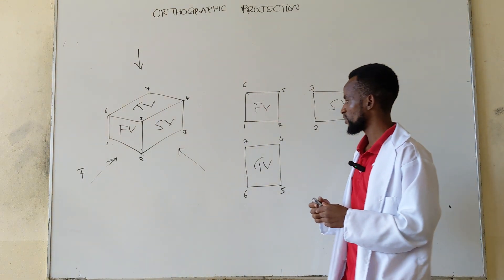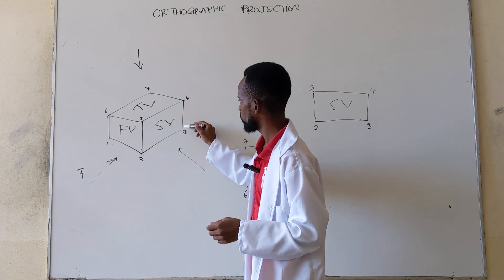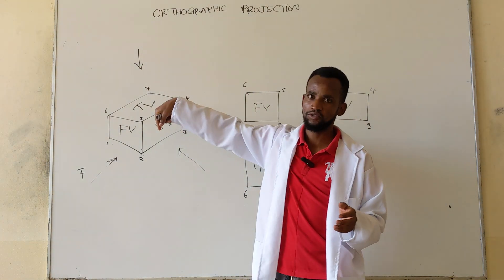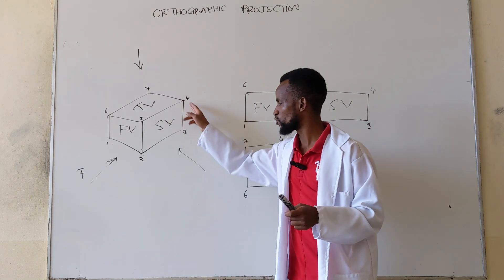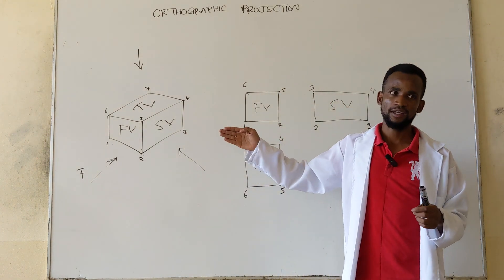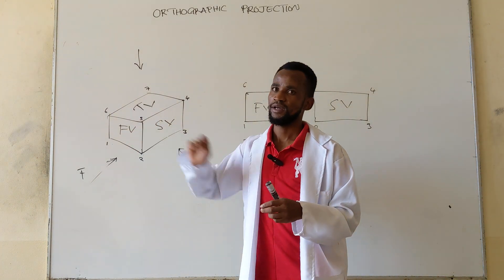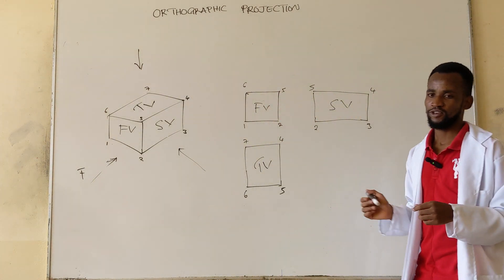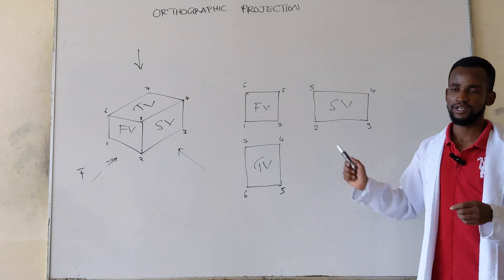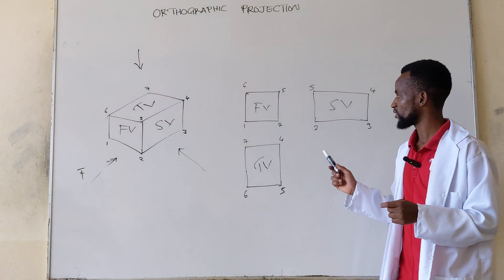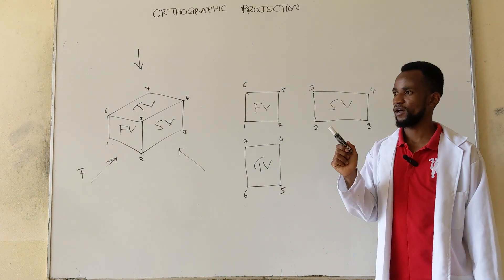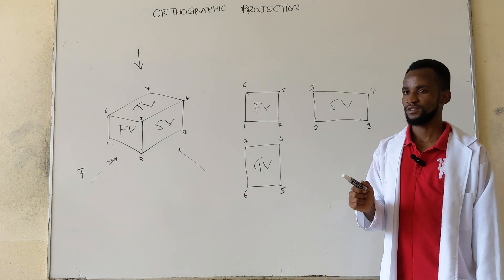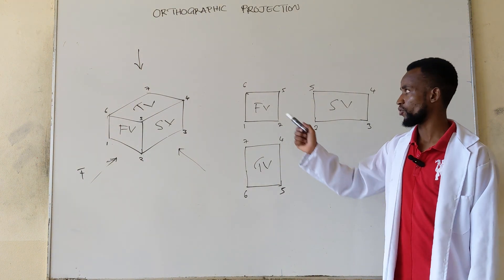It doesn't matter the distance that is between one point and another — you'll not be able to see it as long as you look at it from one direction. You will only know the distance between two specific points when you look at it from that side. When we consider these drawings, these three views, you're going to notice that we have common lines or common edges on each of these views.